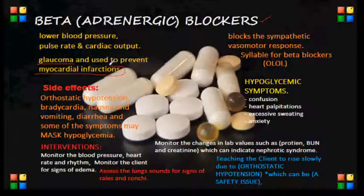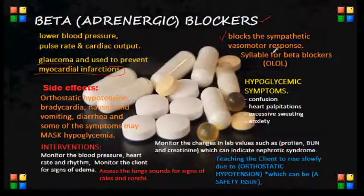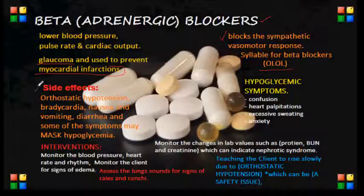What beta blockers do is basically they act by blocking the sympathetic basal motor response in the body. For the NCLEX exam, remember that the suffix for beta blockers is usually O-L-O-L. The potential side effects of beta blockers include orthostatic hypotension, bradycardia, nausea and vomiting, and diarrhea.